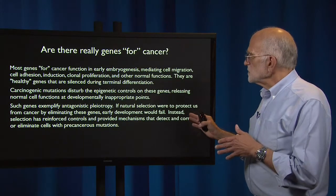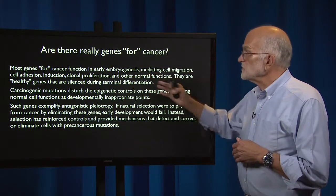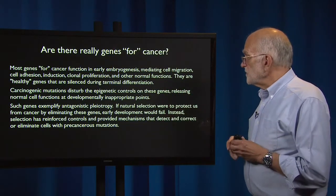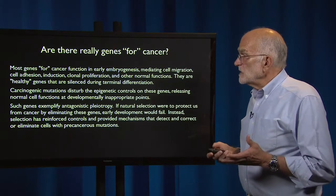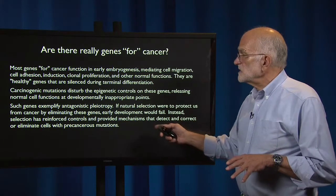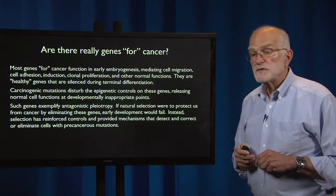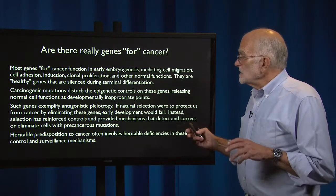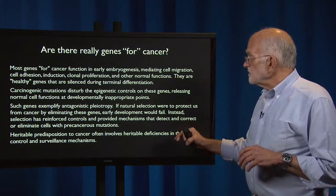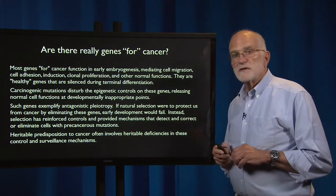If natural selection were to protect us from cancer by eliminating these genes — which all have useful functions in early embryogenesis — then early development would fail. Instead, selection has reinforced controls and provided mechanisms to detect and correct or eliminate cells that have precancerous mutations. A heritable predisposition to cancer often involves a heritable deficiency in these control and surveillance mechanisms.